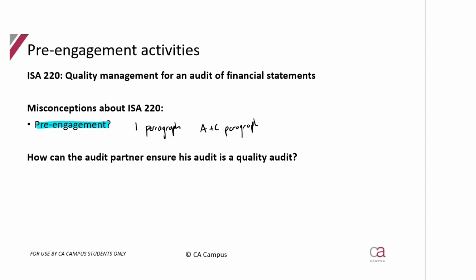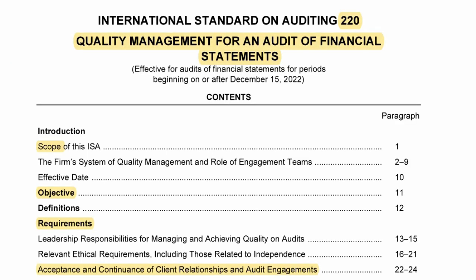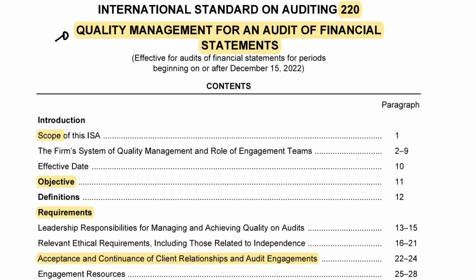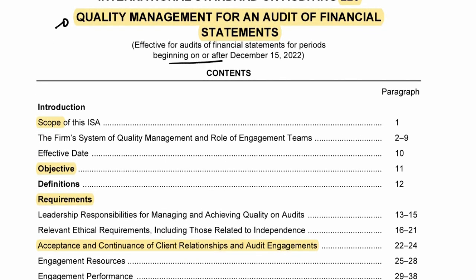ISA 220 — quality management for an audit of financial statements — is effective for periods beginning on or after December 15, 2022, and is therefore examinable for RTC 2023. It covers scope, objectives, and requirements. The relevant sections are highlighted, including acceptance and continuance, ethical requirements, and engagement resources.